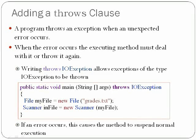A program throws an exception when an unexpected error occurs. When the error occurs, the executing method must deal with it or throw it again. Writing Throws I.O.Exception allows exceptions of the type I.O.Exception to be thrown. An example below shows where to place the Throws I.O.Exception clause within your program. It immediately follows your main header. This causes the method to suspend normal execution if an error occurs.